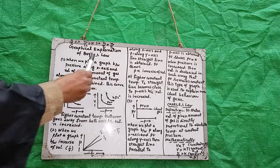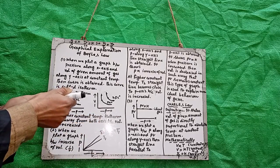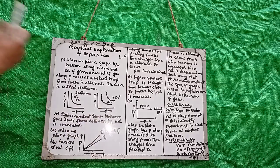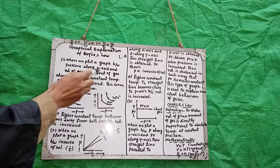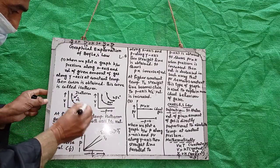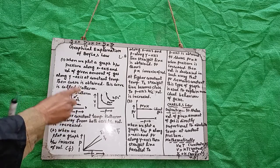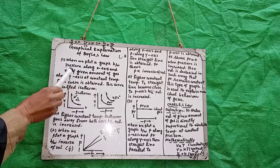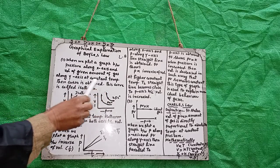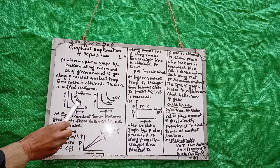Today we are studying the graphical explanation of Boyle's law. There are four types of graphs. When we plot a graph between pressure along the x-axis and volume of the amount of gas along the y-axis at constant temperature, a curve is obtained. This curve is called an isotherm. If temperature is 0 degrees centigrade, you have constant temperature.